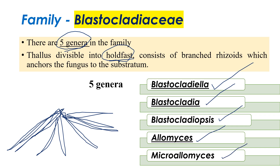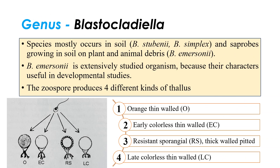The five important genera of Blastocladiaceae are Blastocladiella, Blastocladia, Blastocladiopsis, Allomyces, and Microallomyces. We will discuss three genera: Blastocladiella, Blastocladia, and Allomyces. Blastocladiella occurs in soil and also in agricultural plant and animal debris. Species like Blastocladiella stubenei and Blastocladiella simplex occur in soil, while Blastocladiella emersonii grows in soil, plants, and animal debris. Blastocladiella emersonii was extensively studied for developmental studies.